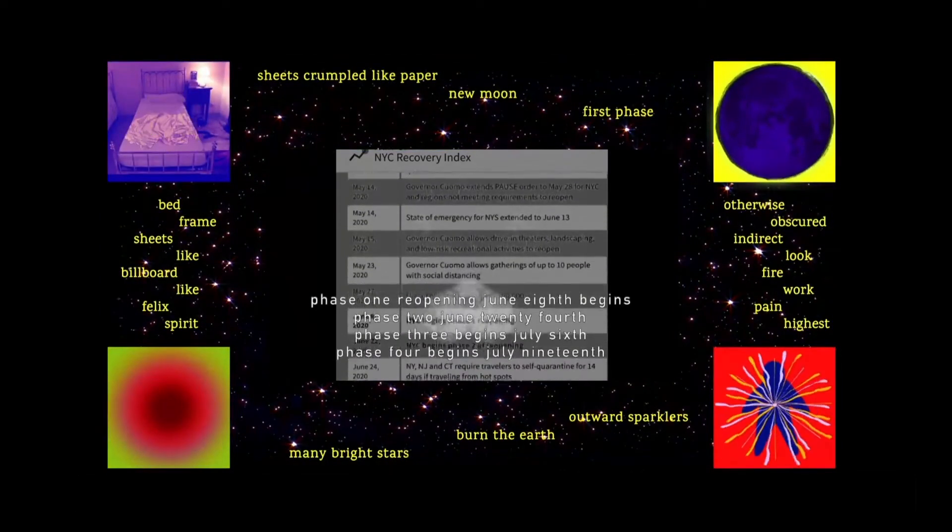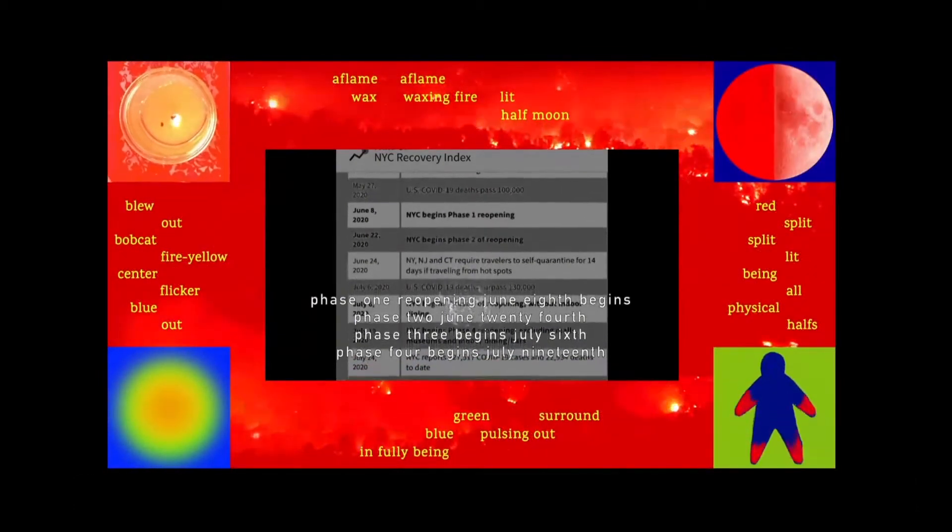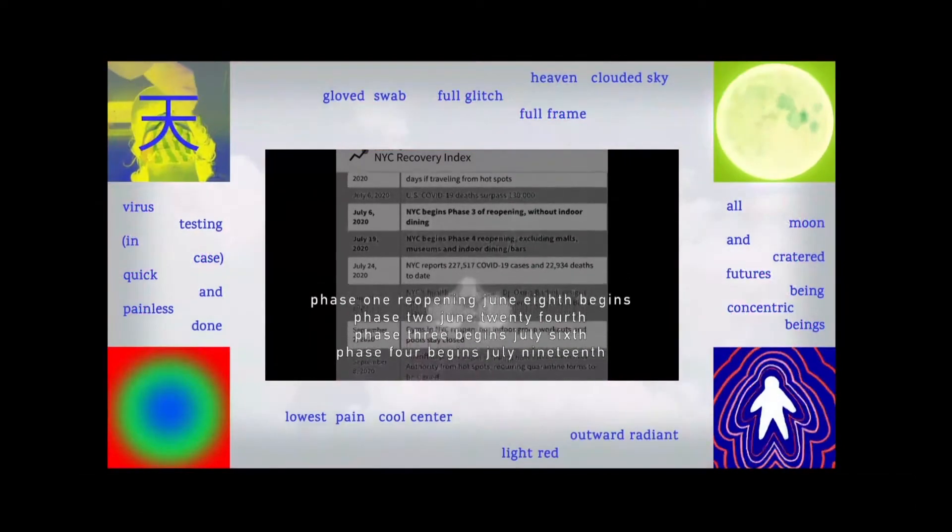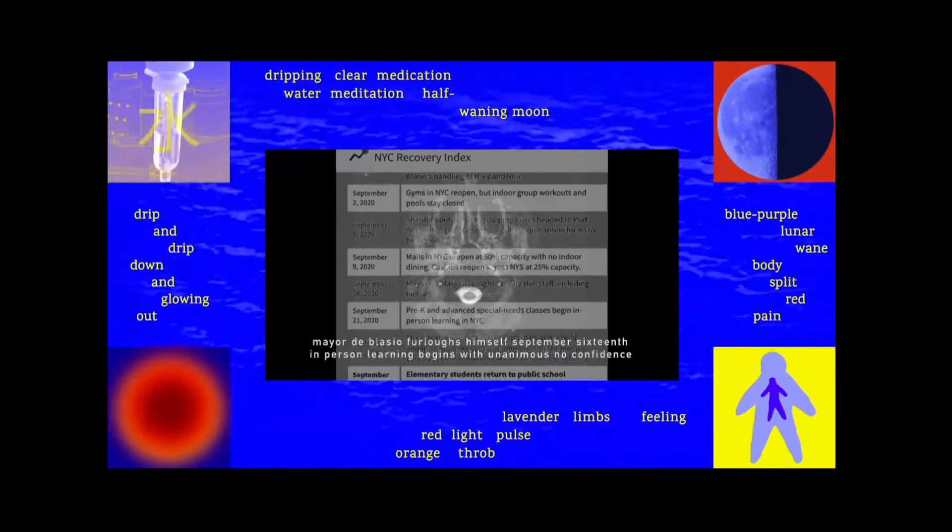Phase 1 reopening, June 8th begins. Phase 2, June 24th. Phase 3 begins, July 6th. Phase 4 begins, July 19th. Mayor de Blasio furloughs himself, September 16th.